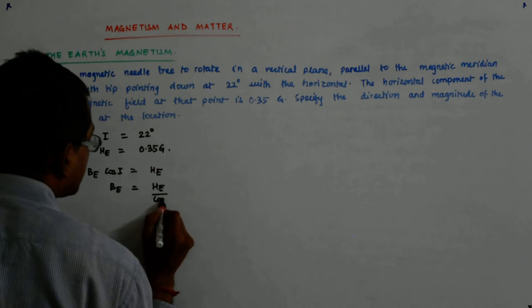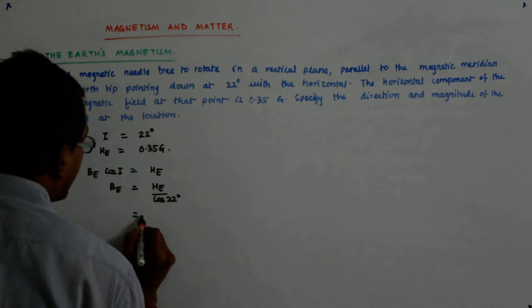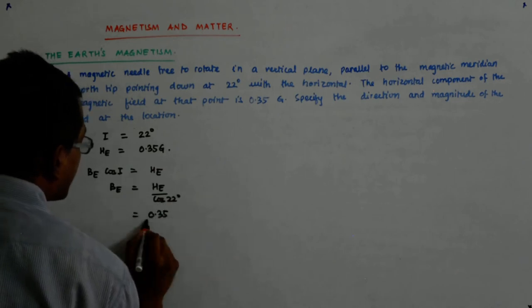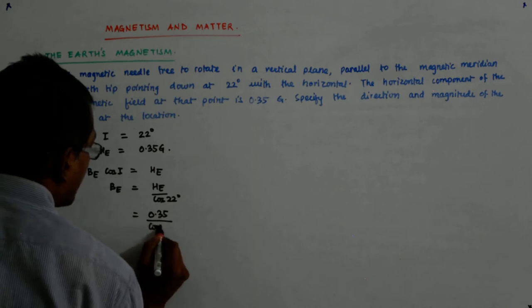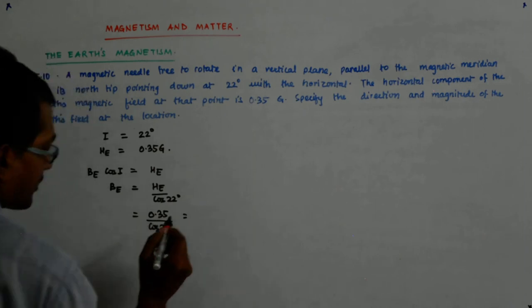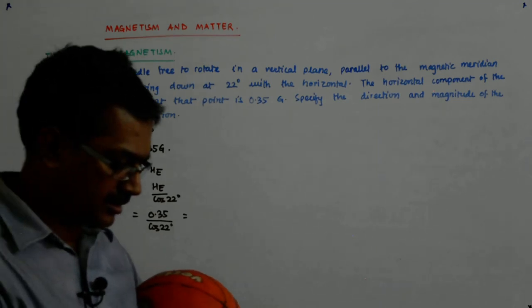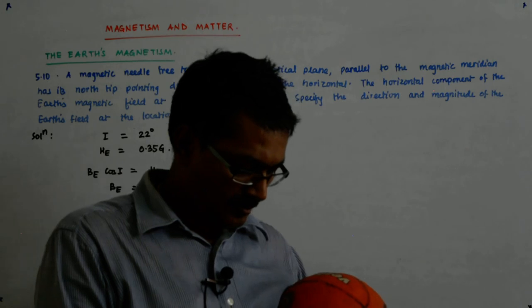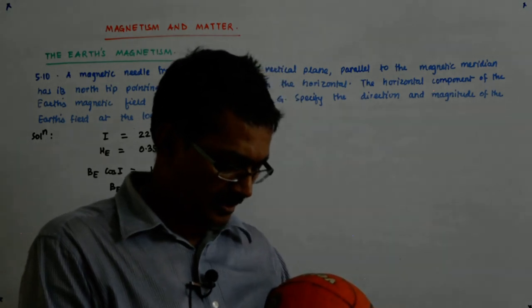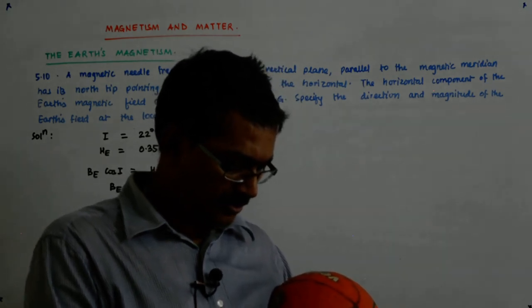So that is He upon cos 22 degrees that is 0.35 divided by cos 22 degrees, right? So I will do this calculation.